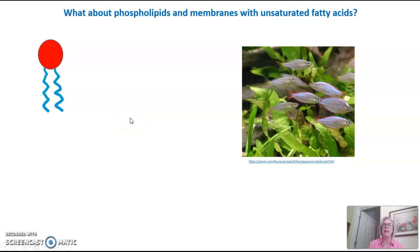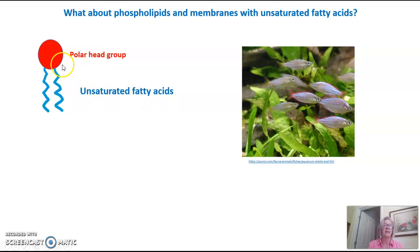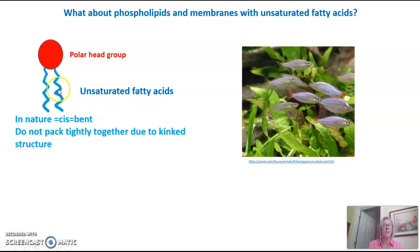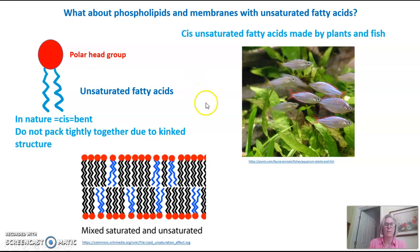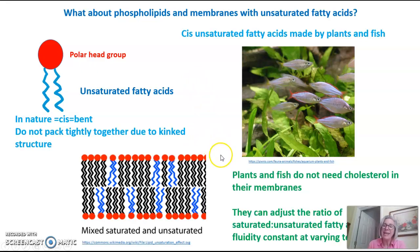What about phospholipids with unsaturated fatty acids? We would still have a polar head group composed of glycerol and phosphate, and two unsaturated fatty acids, indicated by a bent shape. In nature, unsaturated fatty acids tend to be made in the cis format, which is bent, and because of that, they do not pack tightly together due to that kinked nature. These cis unsaturated fatty acids are made by plants and by fish. With plants and fish, you don't need cholesterol in their membranes because they can adjust the ratio of saturated to unsaturated fatty acids to keep the fluidity constant at varying temperatures.